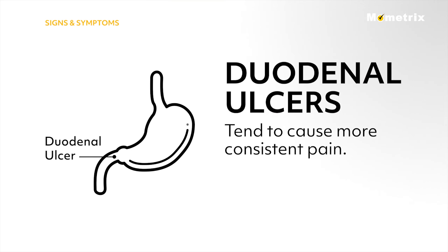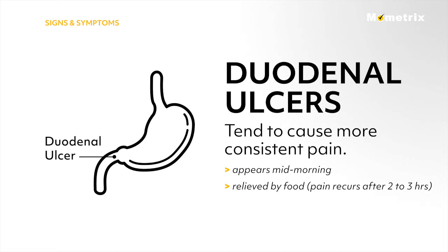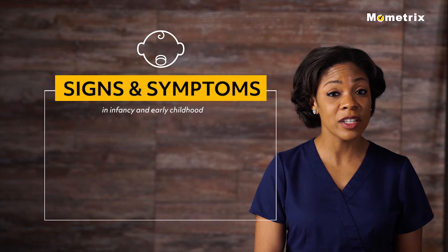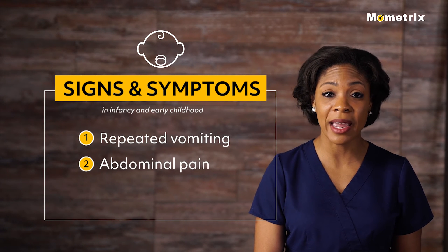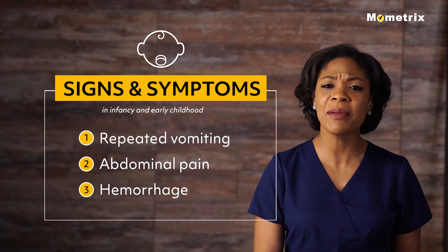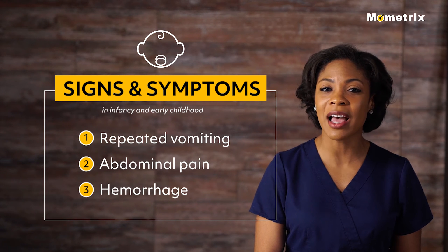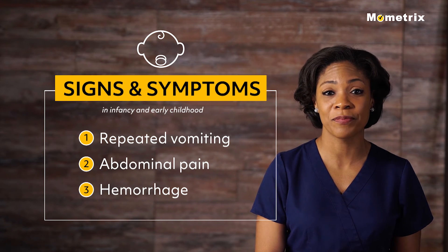Duodenal ulcers tend to cause more consistent pain, often appearing mid-morning. The pain is relieved by food but recurs two to three hours after a meal and often awakens the patient at night. In infancy and early childhood, repeated vomiting, abdominal pain, and/or hemorrhage may be the first signs of a duodenal ulcer.